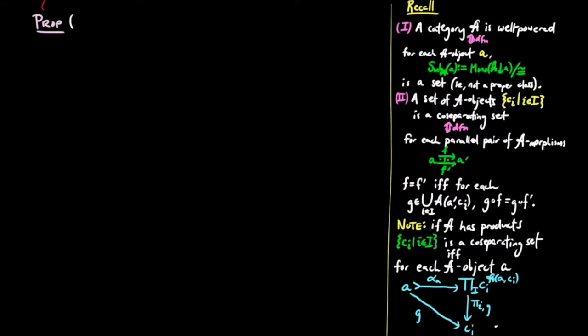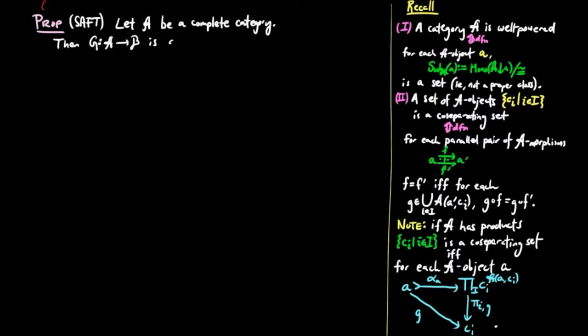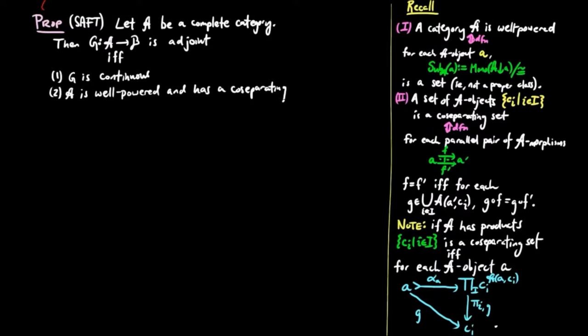The Special Adjoint Functor Theorem is as follows: Let A be a complete category. Then G is an adjoint if and only if, first, G is continuous, and second, A is well-powered and has a co-separating set.